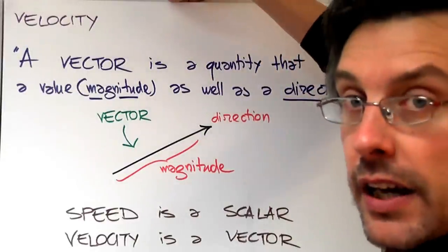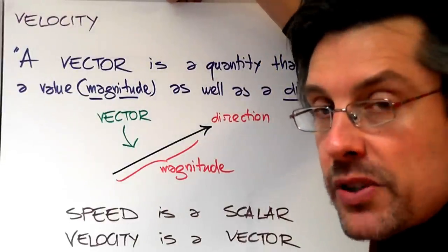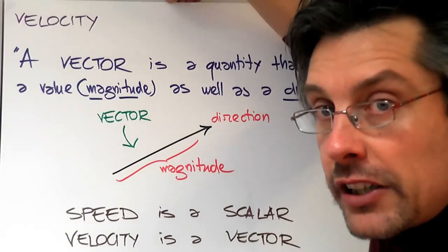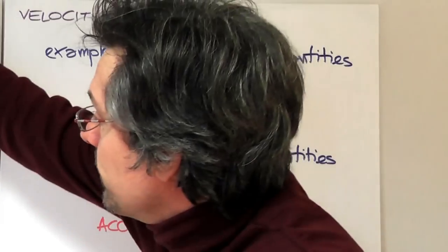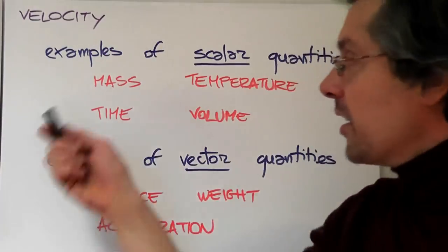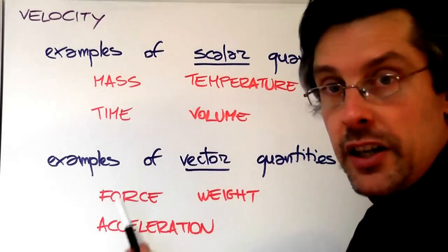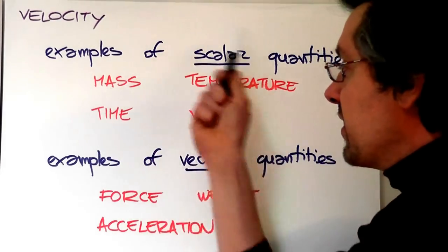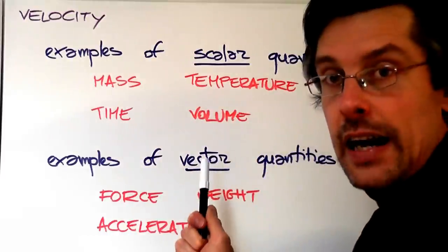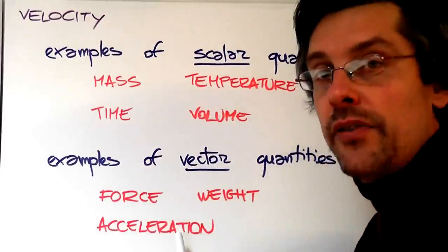Are speed and velocity the only representatives of these two categories? Let's see. Here are some examples. Some of these physical quantities we already encountered, and now we'll see that some of them are scalars and some of them are vectors.